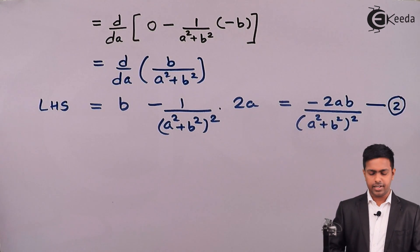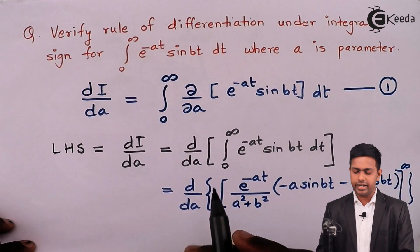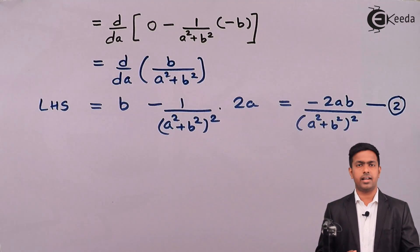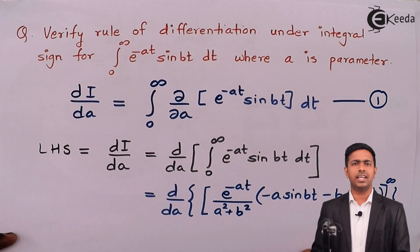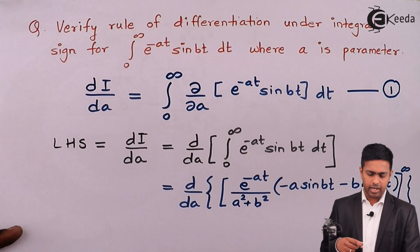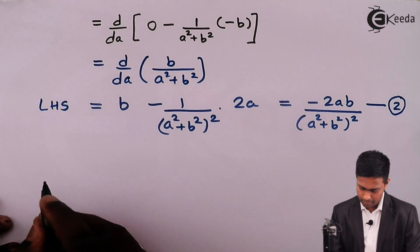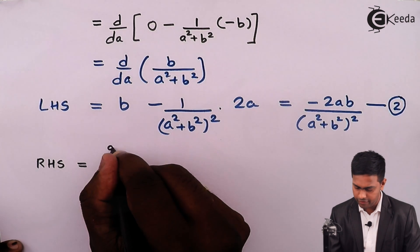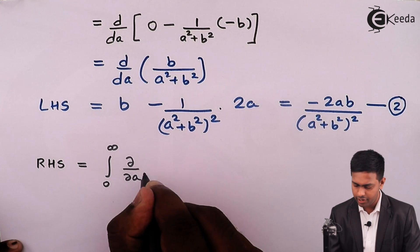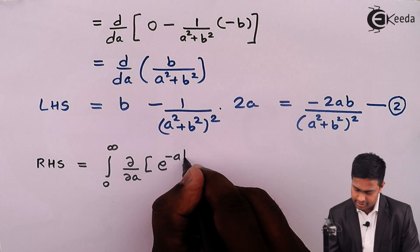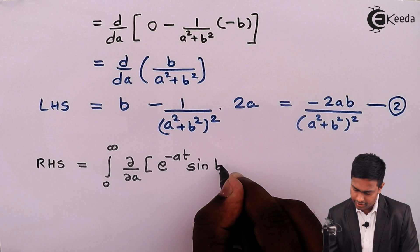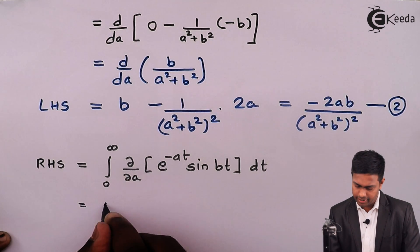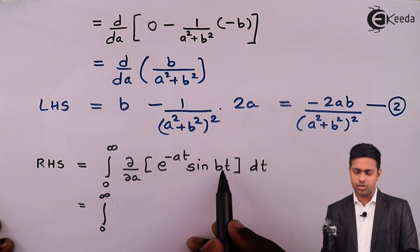Now let's evaluate the right hand side and get equation number 3. If the values of LHS and RHS are the same, we will say the rule of DUIS is verified. RHS is equal to the integration from 0 to infinity of the partial derivative with respect to A of e raised to minus at sin bt dt.